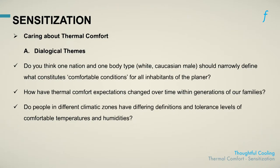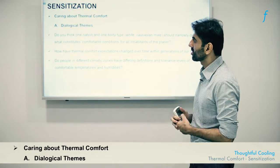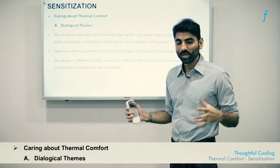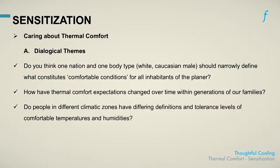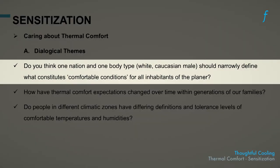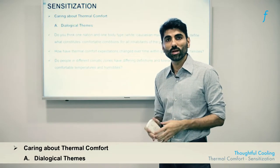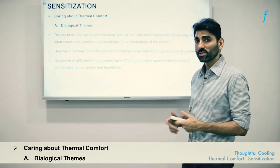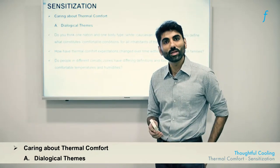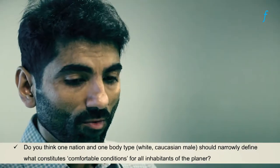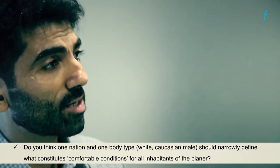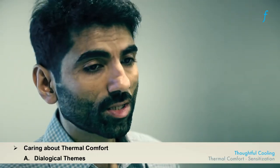A very interesting and possibly inflammatory debate that a teacher could use to generate a lot of interest could be the idea of thermal comfort for the whole world being defined by one nation and one body type — the white Caucasian male — which has dominated the discourse around comfort and discomfort, and has directly influenced the design of every air conditioner we see around us. Is that fact disturbing and acceptable for students of this era who have begun critically analyzing the presuppositions of the world around them?